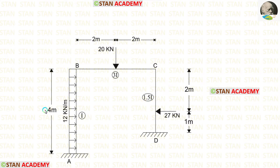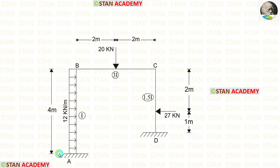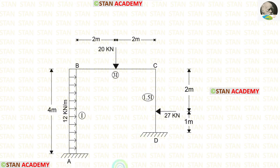The length of column AB is 4 meters, the length of beam BC is 4 meters, and the length of column CD is 3 meters. At points A and D there are fixed supports. This frame is a sway type frame because the columns AB and CD have different lengths.